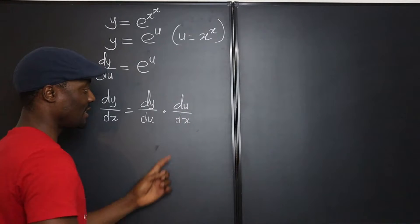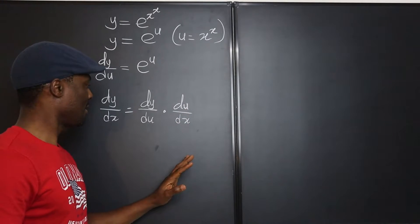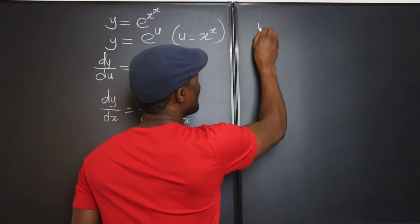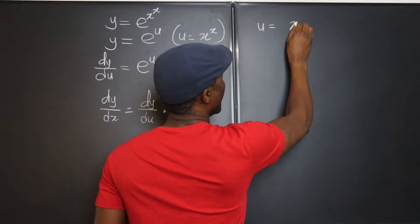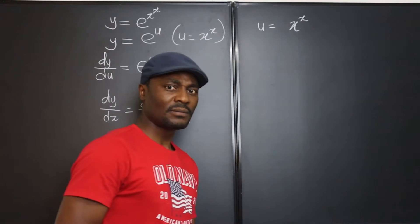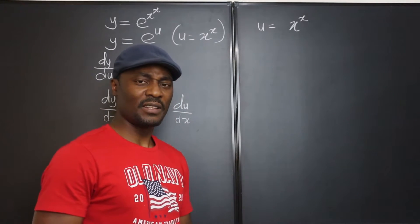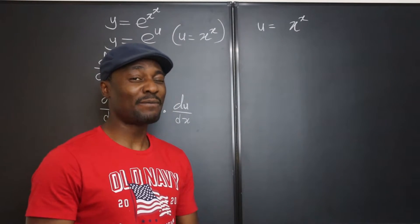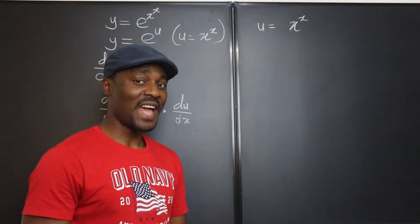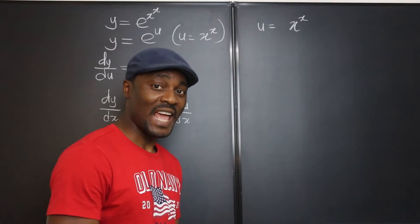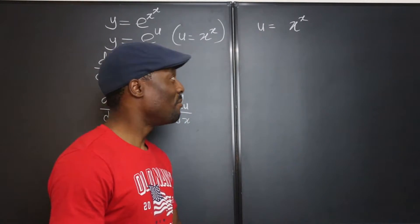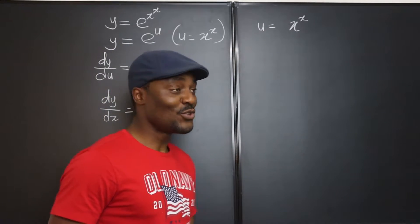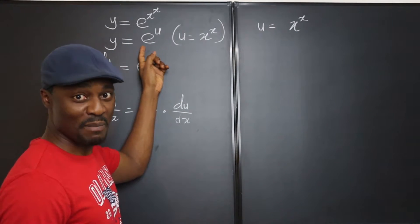So, what is du/dx? Let's do it here. If u equals x to the x, how can you differentiate a function to a function? That's where you have to always remember that your natural log, ln, has to show up. But when you put ln in any function that did not have ln, you have to also bring in Mr. E.